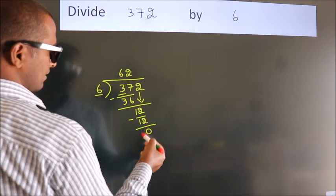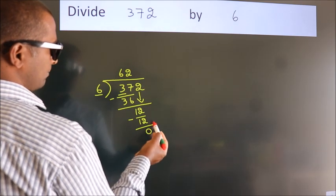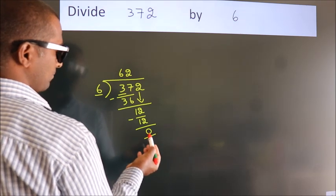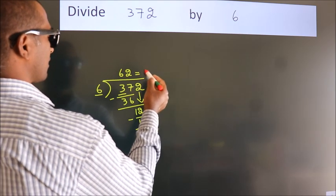After this, no more numbers to bring it down. And we got remainder 0. So this is our quotient.